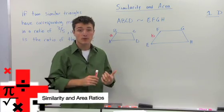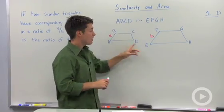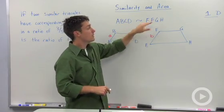We can use this idea of similarity and apply it to area. Let's say we had two polygons that are similar. So here we have ABCD is similar to EFGH.